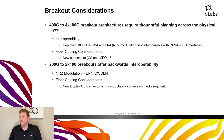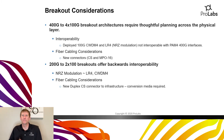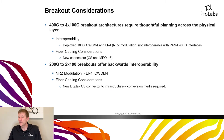As you deploy 400 gig, there are a few things to keep in mind with breakouts and aggregation. The 400 gig to 4x100 gig breakout architecture requires thoughtful planning across the entire physical layer. Currently deployed 100 gig CWDM4 and LR4 NRZ-modulated transceivers are not interoperable with PAM4 400 gig interfaces — a very important point. New connectors like CS and MPO-16 probably aren't in your network today. However, 200 gig to 2x100 gig breakouts do offer backwards interoperability since NRZ modulation makes them compatible with legacy LR4 and CWDM4 transceivers.